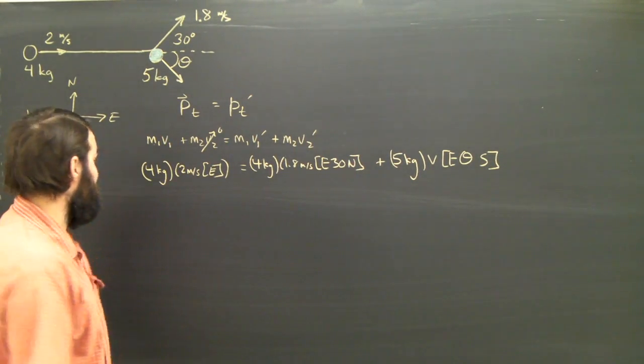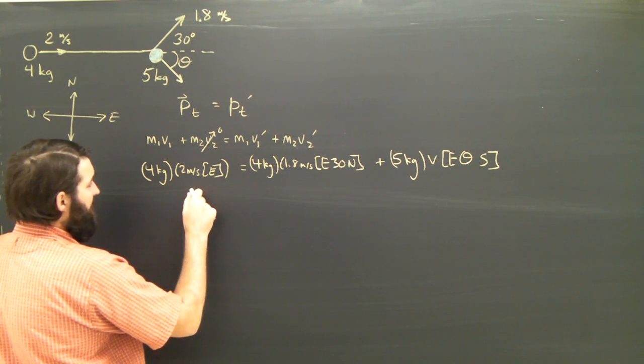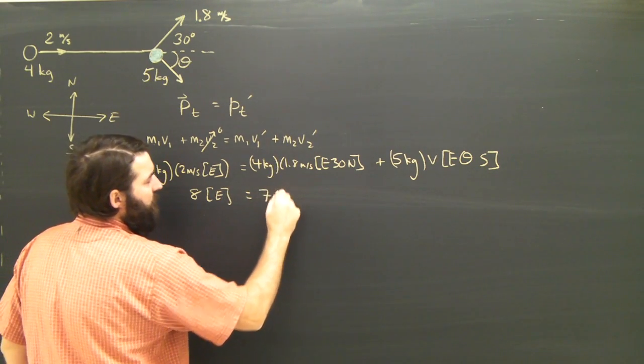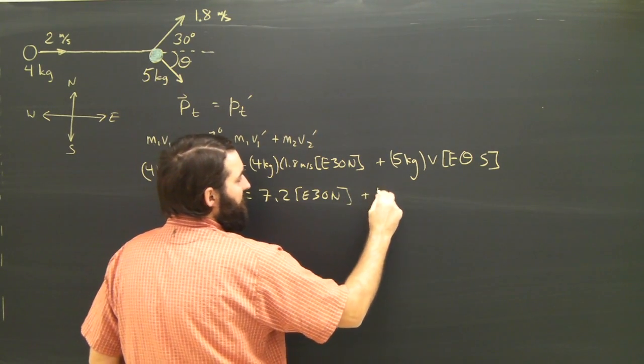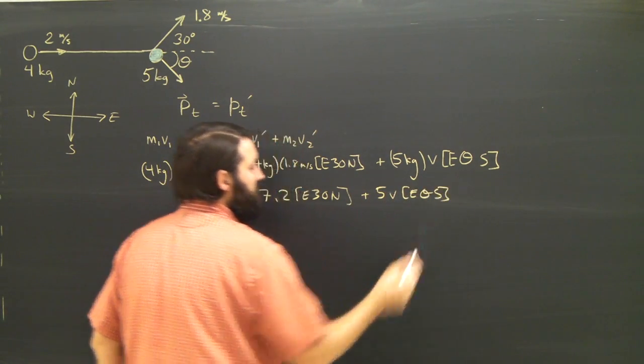Now I have a vector equation, which I can simplify, and I'll get rid of the units just to make it easier. And I say 8 east equals 7.2 east 30 north plus 5 V east theta south.